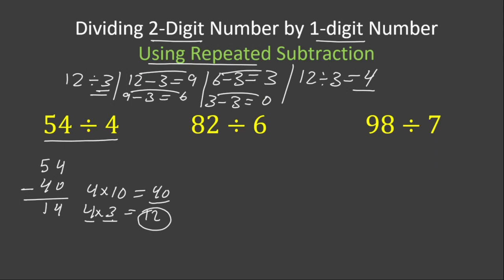14 minus 12 is equal to 2. Seeing that 2 is less than 4 and we cannot subtract 4 anymore. How many times did we subtract 4 from 54? We subtracted it 13 times. 10 plus 3 is 13. So 13 is the answer. We can write 54 divided by 4 equals 13. We used repeated subtraction and we subtracted 4 from 54 thirteen times.